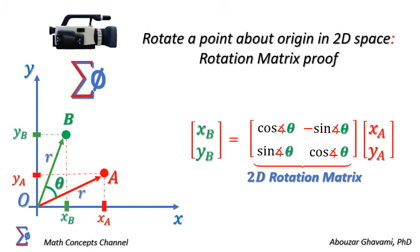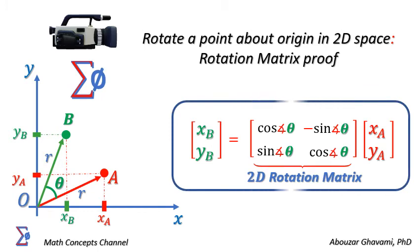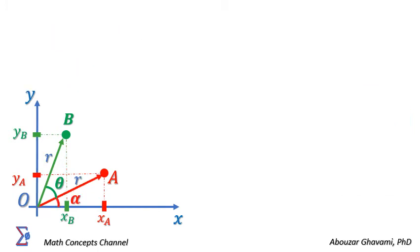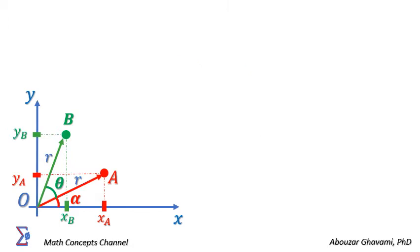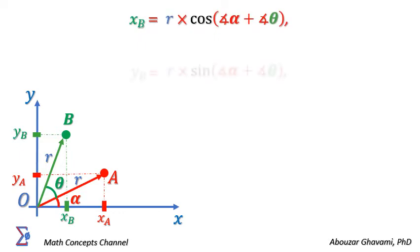Let us review the proof of this equation in summary. Note that rotation preserves the distance between the rotating point and the center point of rotation. Thus, the length of vector OA equals the length of vector OB. Let us denote this distance as R. Let us denote alpha as the angle between rotating point A and the x-axis. Writing the coordinates of point B in polar format, we have x of B equals R times cosine of (alpha plus theta), and y of B equals R times sine of (alpha plus theta).